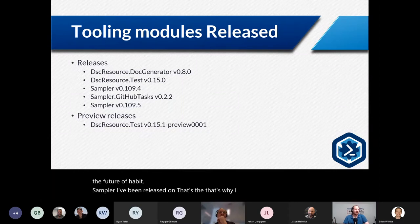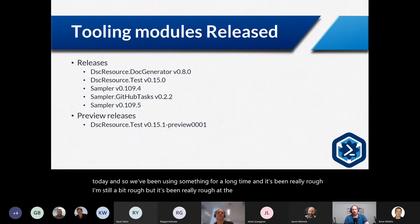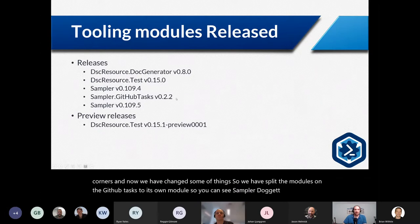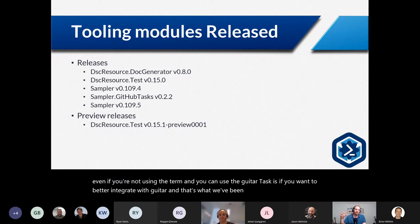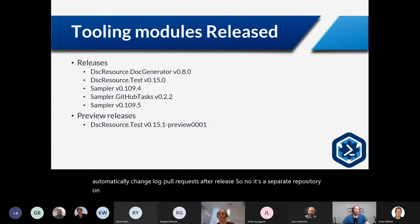Sampler has been released and that's what I wanted to talk about today. It's been really rough at the beginning because we cut some corners, and now we've changed some things. We've split the modules and the GitHub tasks into their own module — Sampler.GitHubTasks. The idea was to extract the GitHub tasks so you can use Sampler in your own on-prem environment without using GitHub, but use the GitHub tasks if you want better GitHub integration.